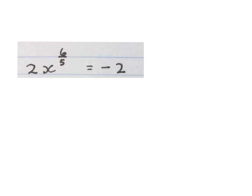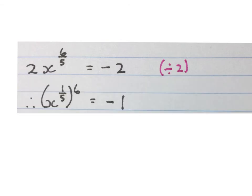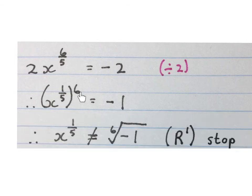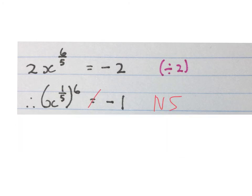The next equation: we have to solve for x. First we divide by 2 on both sides and break up the exponent. Minus 2 divided by 2 is minus 1. To get rid of the power of 6 you'll have to do a sixth root, and any even root can't have a negative value. So x to the power of a fifth is non-real — and you stop. A lot of people at this stage just write no solution, but try and understand why.